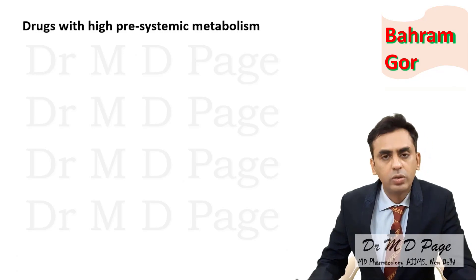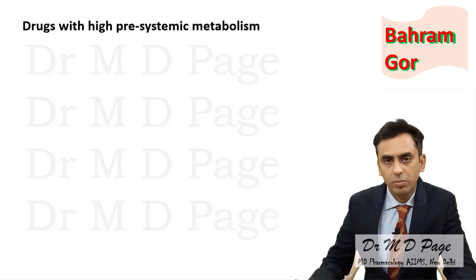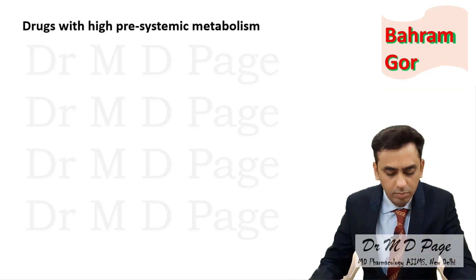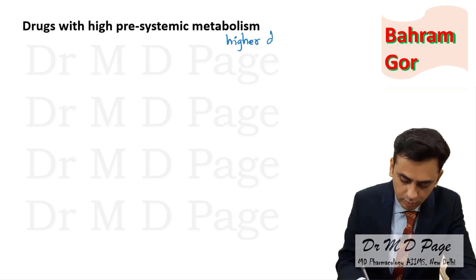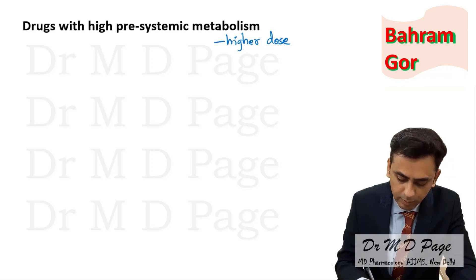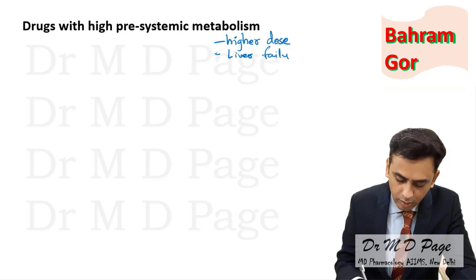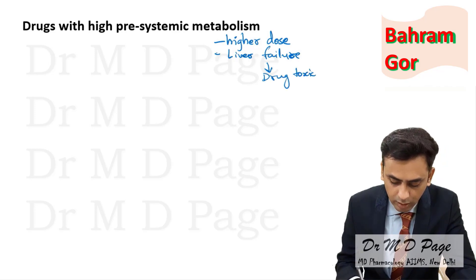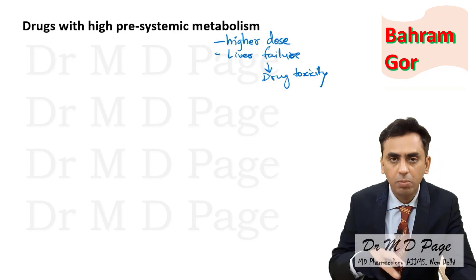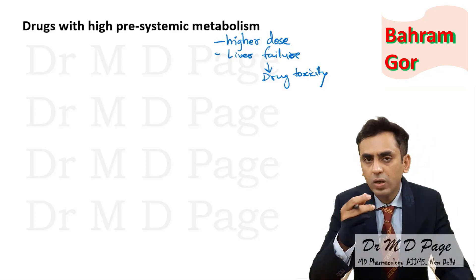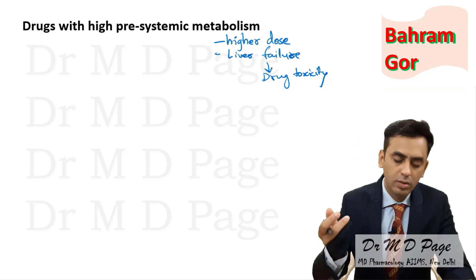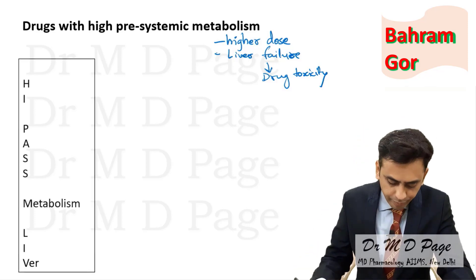Why do you need to know drugs with high pre-systemic or high first-pass metabolism? First-pass metabolism is also known as pre-systemic metabolism. You need to know these drugs because you need a higher dose for such drugs, as they are getting metabolized in the liver. Also, if there is liver failure, the drug is not getting metabolized, which may precipitate drug toxicity for drugs that are normally metabolized by the liver. These drugs are also asked frequently in exams.